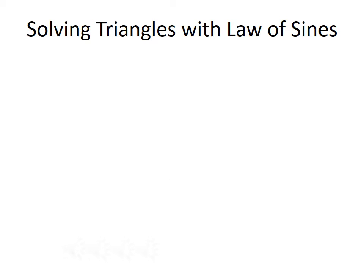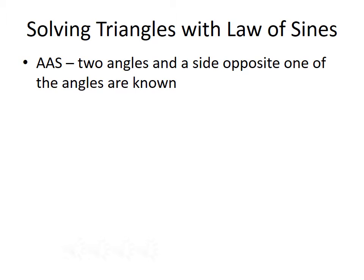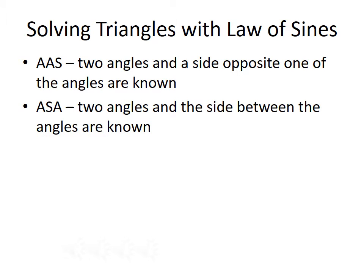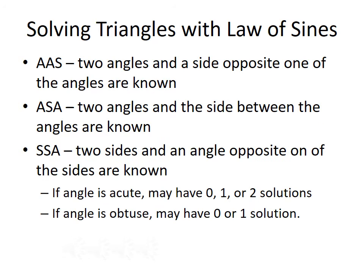Let's talk about solving triangles using the Law of Sines. The first type is an angle-angle-side triangle, where we know two angles and the side opposite one of them. The second type is an angle-side-angle triangle, where we know two angles and the side between them. The third type is a side-side-angle triangle, where we know two sides and the angle opposite one of the sides.